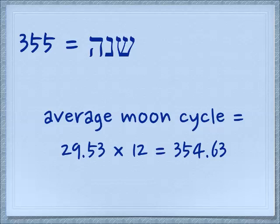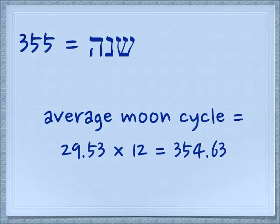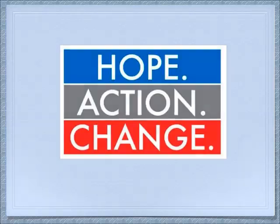Concerning gematria: when we have the word for year, Shana, it adds up to 355. The average moon cycle is 29.53 days. If you don't know about the traditional Jewish calendar, there's a video in the description explaining it. We run on a 12-month lunar cycle, but because we come up short of the solar cycle, about every third year we add a leap month. The average moon cycle — ranging from about 29.3 to 29.8 days — multiplied out gives basically 355 days, which adds up to a year.